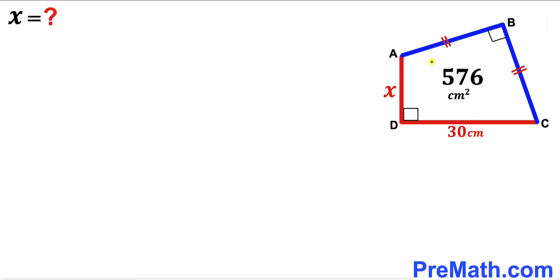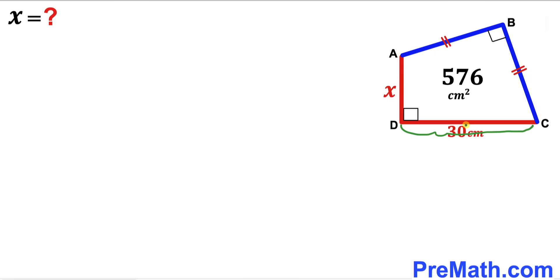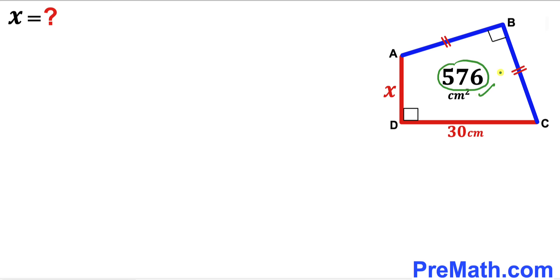Welcome to pre-math. In this video we have a quadrilateral ABCD such that angle ADC is 90 degrees and angle ABC is 90 degrees as well. Side AB is equal to side BC. Side CD is 30 centimeters, side AD is represented by X centimeters, and the area of the quadrilateral is 576 centimeters squared. Our task is to find the value of X.